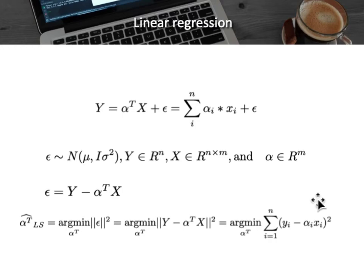The goal is to find the best weight vector alpha transpose that minimizes the L2 norm squared of the residual term epsilon. We can replace epsilon squared by its definition, so this becomes minimizing the expression y minus alpha transpose x, squared.